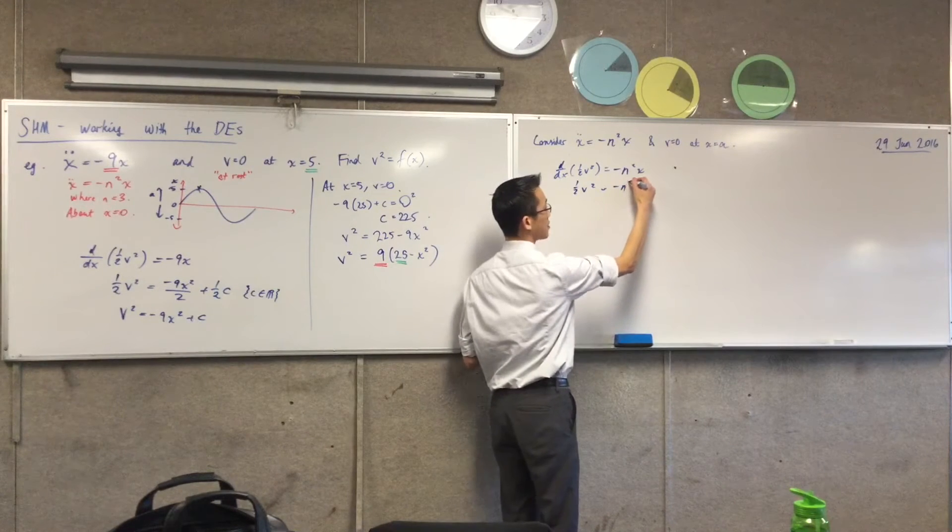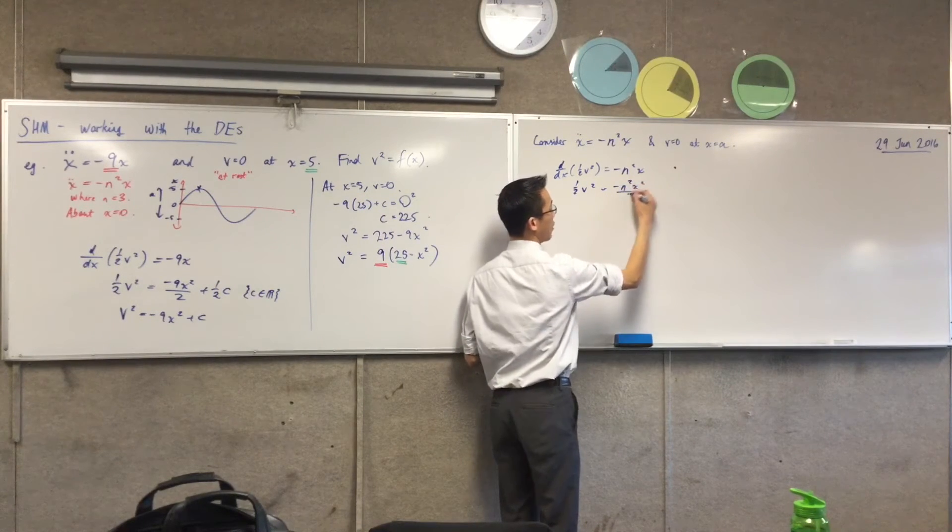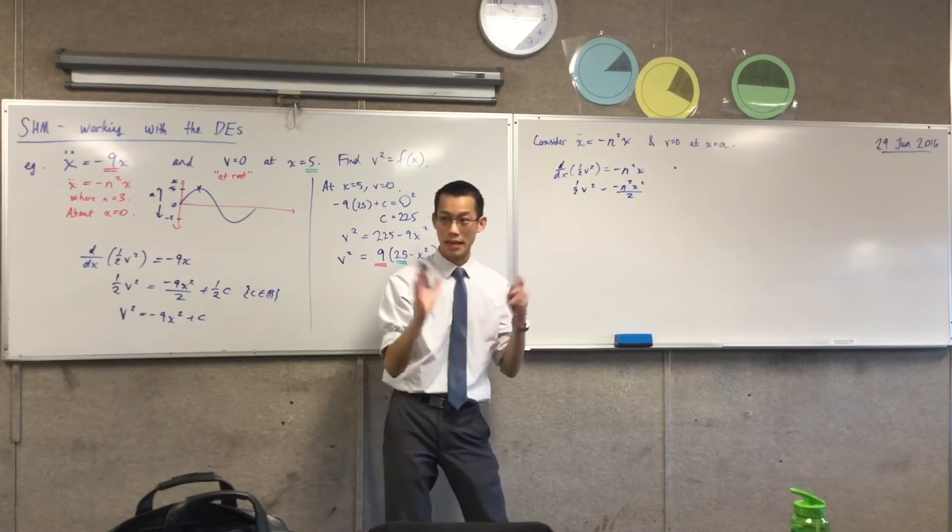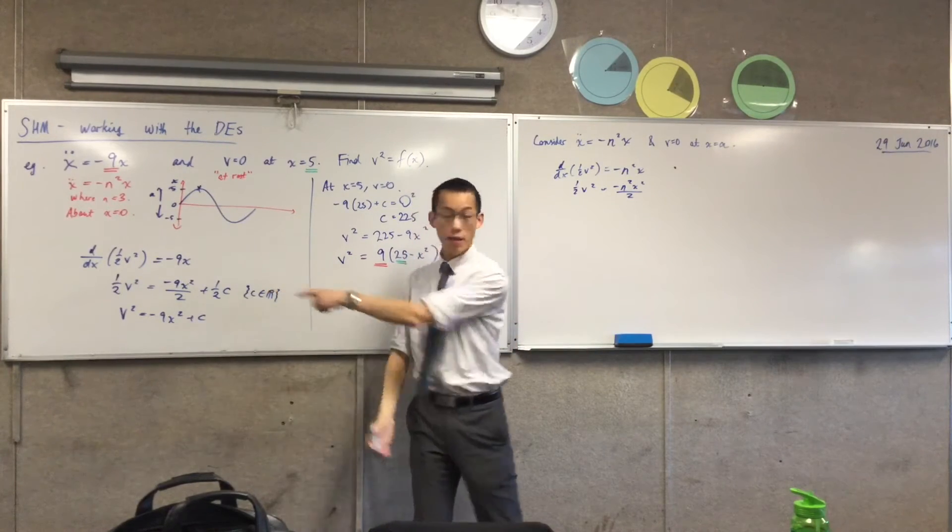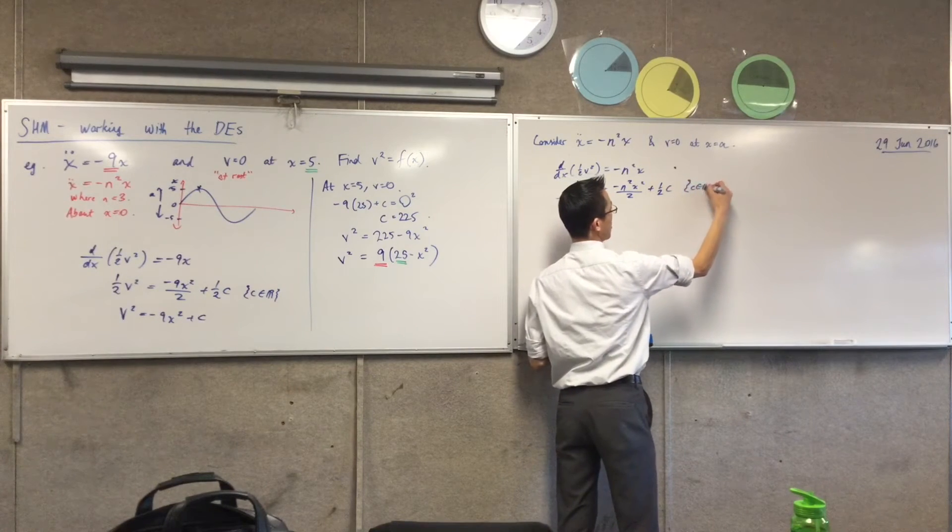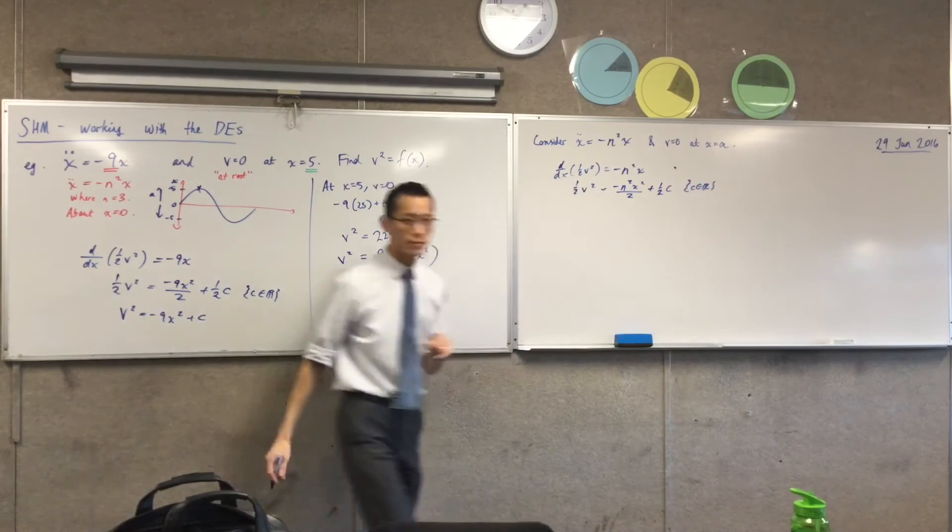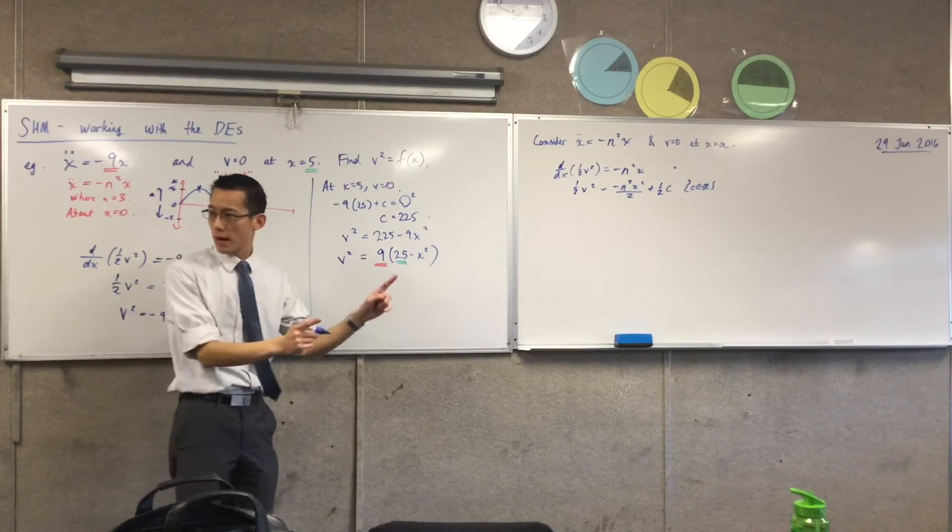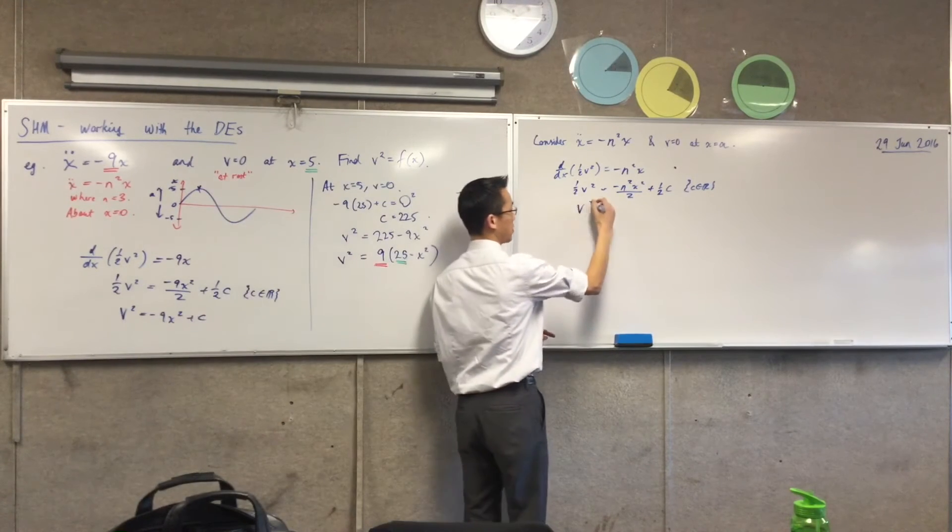So I'm going to do the same thing here. I'm going to get my half v squared. That leaves me with minus n squared x squared on 2, right? Because that n squared is just that constant hanging out the front, plus half of this guy, the constant of integration. And then I multiplied everything through by 2, right? Because I just wanted v squared.